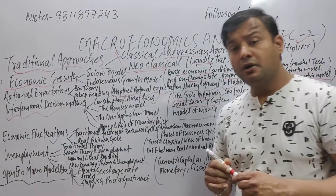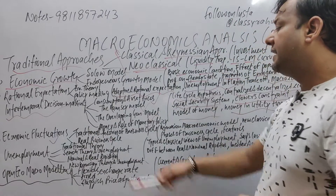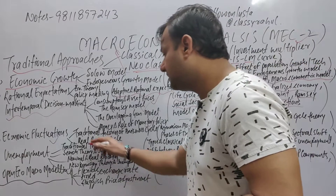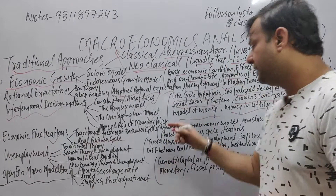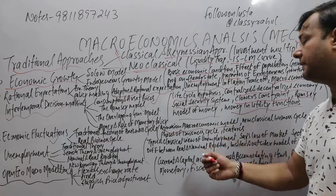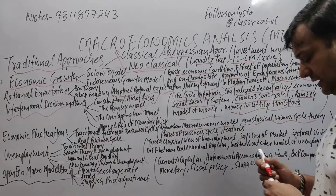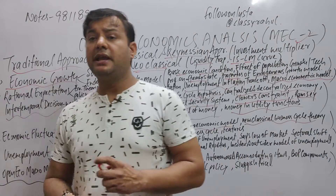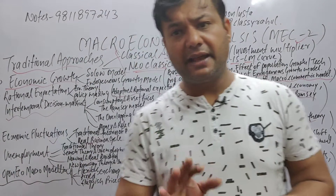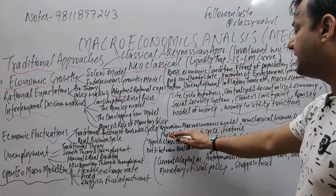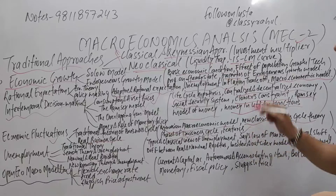Then we come to the next part: economic fluctuations. What are economic fluctuations and which concepts are important? First: traditional theories of business cycle, and then the real business cycle — you cannot avoid this one because almost every paper has a question on it. The Keynesian macroeconomic model — this is confirmed to have a question, whether in the first or last section. Then new classical business cycle theory — what is the difference between new classical business cycle theory and Keynesian theory? This is expected. Also: phases of business cycle, their features — again theoretical.